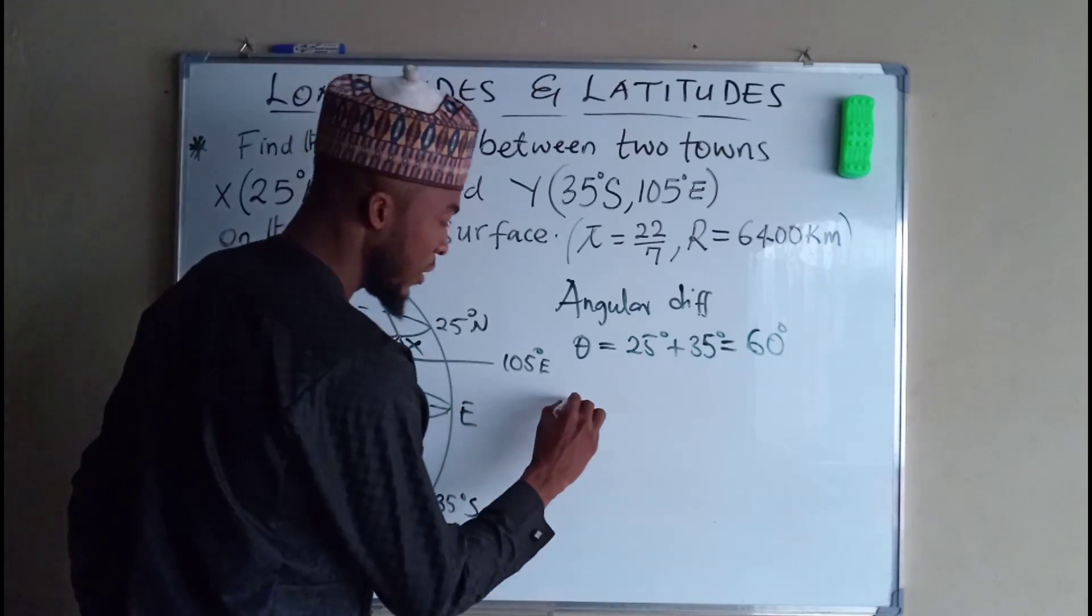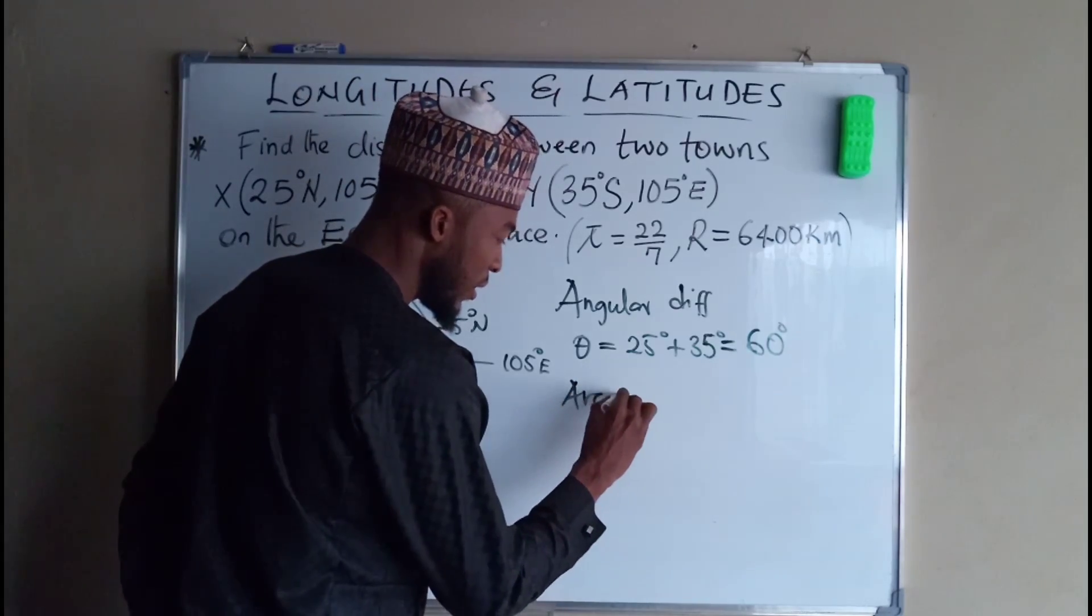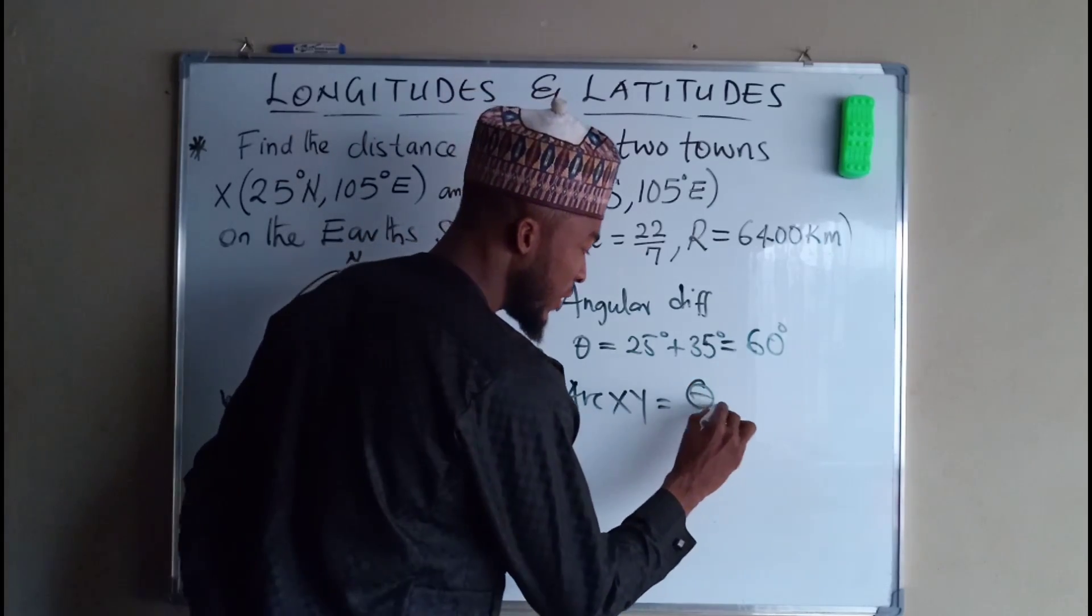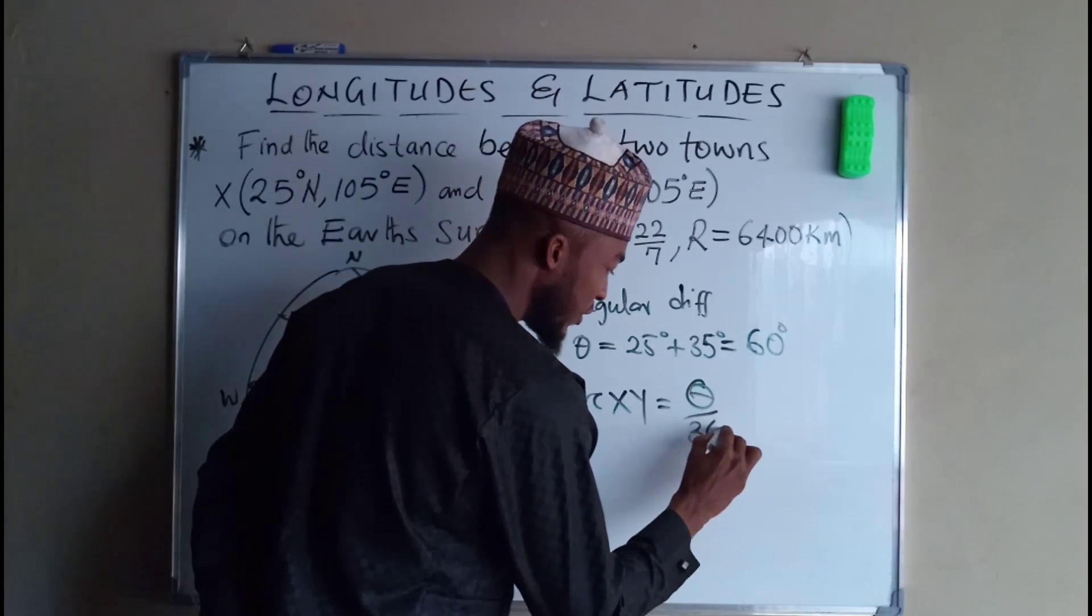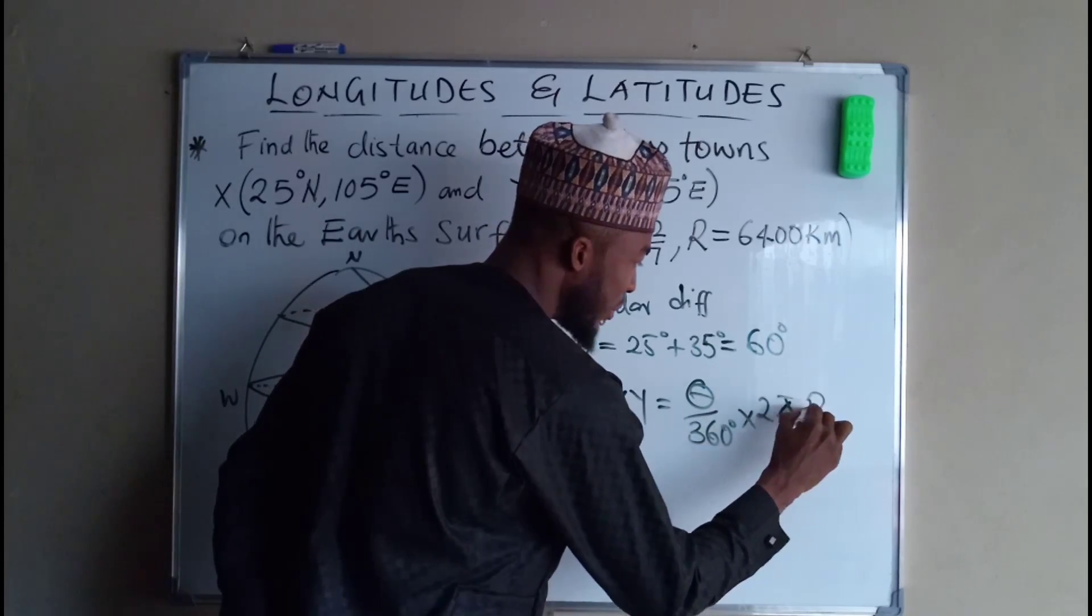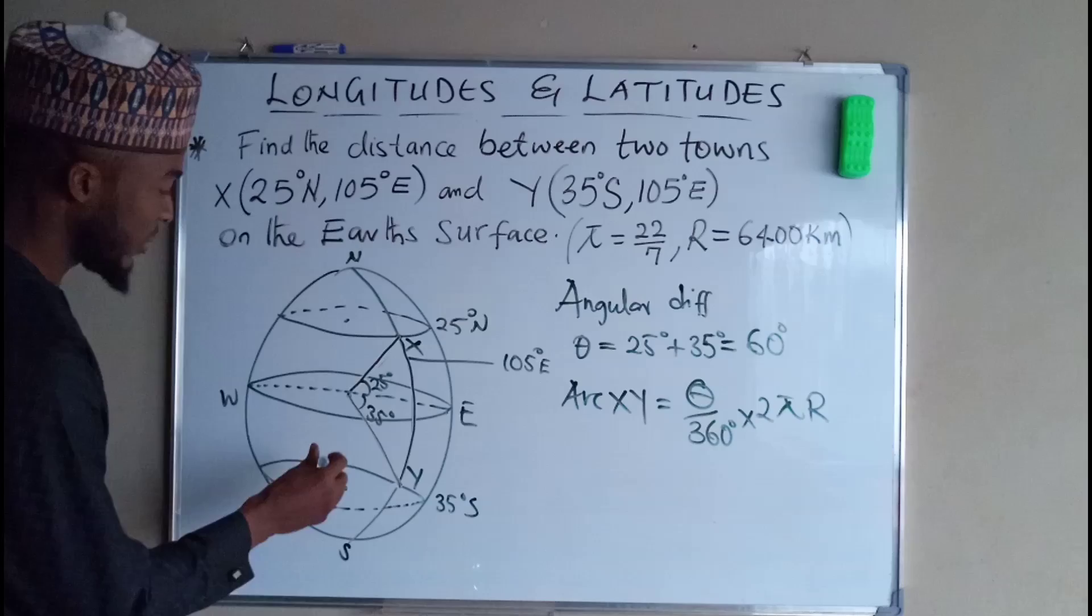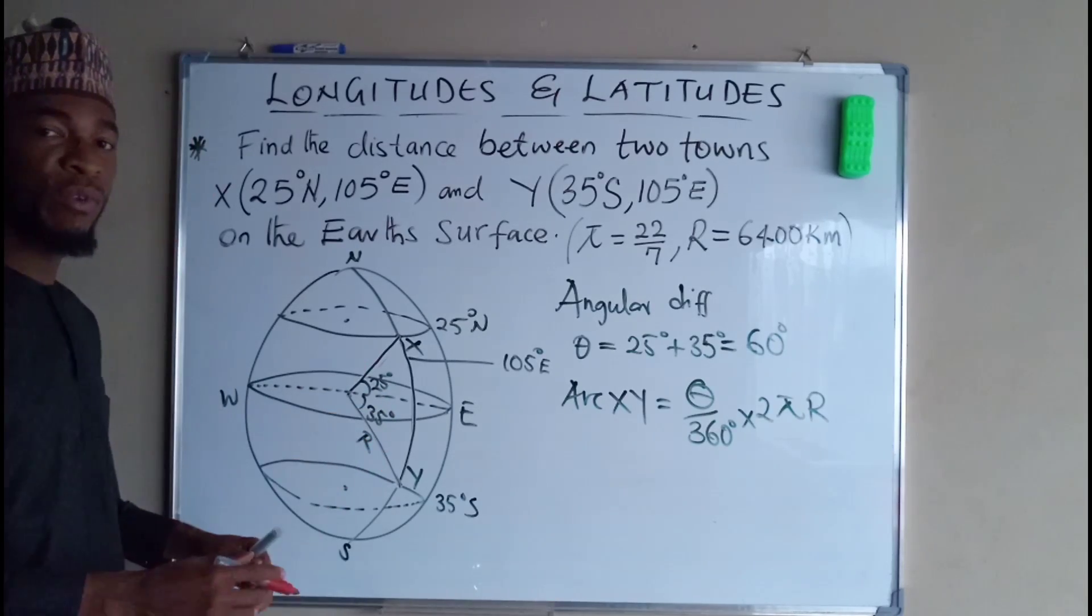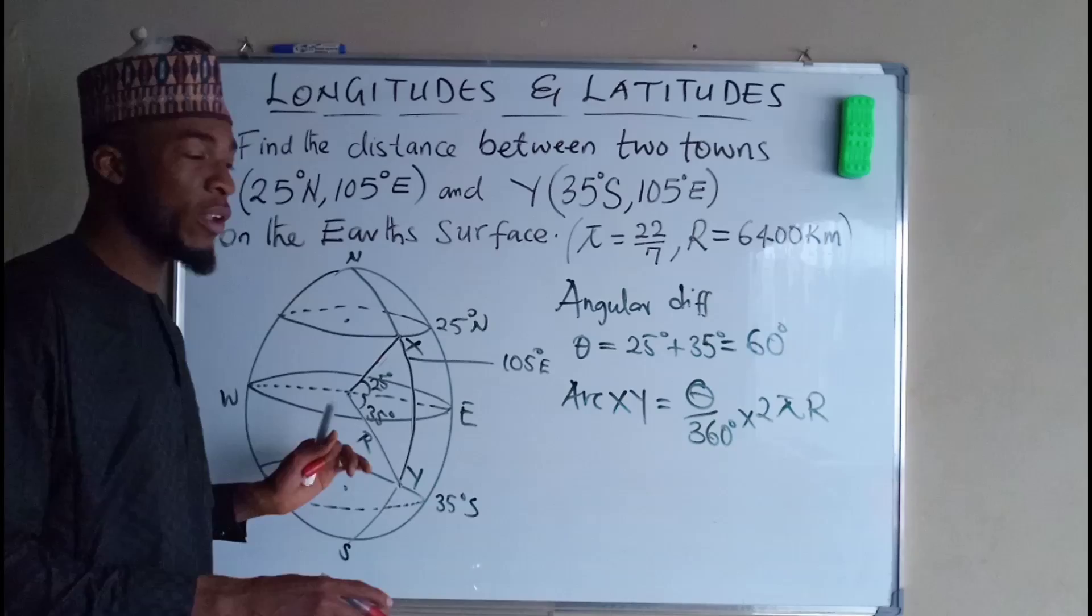Then we need to find the length of this arc, which is arc XY equals theta divided by 360 degrees multiplied by 2 pi capital R. Capital R because this radius is the radius of the earth from the greatest circle.